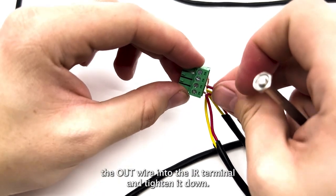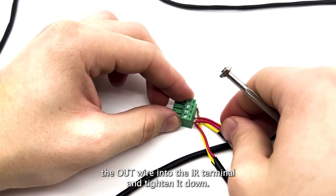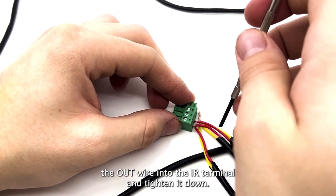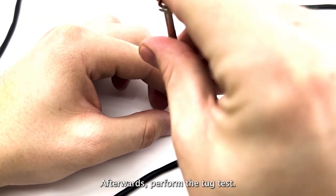Next, insert the OUT wire into the IR terminal and tighten it down. Afterwards, perform the tug test.